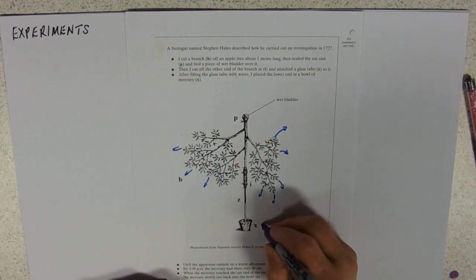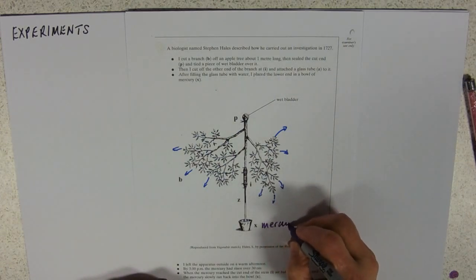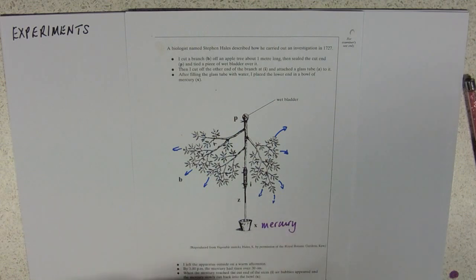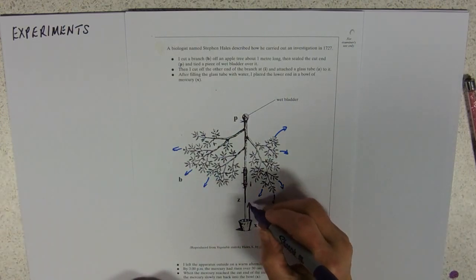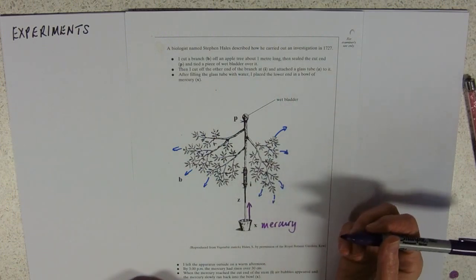So, this X, that's a bucket of mercury. I don't think they had health and safety in those days, to be honest. And he left it outside, warm afternoon, and the mercury, he said, went up by 30 centimetres.